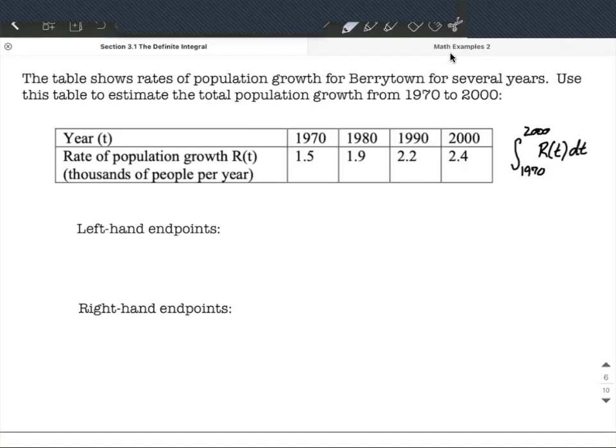So for the left-hand endpoints, we're going to start at the left-hand side, 1970, go up to 1.5, and then over to 1980 to kind of form a rectangle. So you can kind of visualize this. In 1970, it had a rate of 1.5. So that's like the height, right, the output value there of r of t. And that goes for 10 years, so we're going to multiply it by 10.